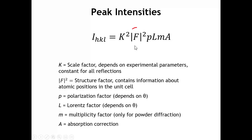Then we come to F squared, called the structure factor, which is far and away the most important term in this expression. F squared tells us about the interference effects that come from atoms located at different points in the unit cell. When we're trying to determine the crystal structure, F squared is the key term that contains all of the information about the positions of the atoms.